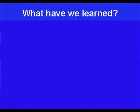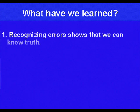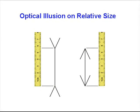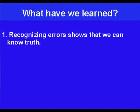What have we learned? First, we learned that we can only recognize errors by knowing the truth. We were able to tell that the lines were the same length, because we could measure them accurately. Once we knew the truth of them being the same length, we could tell that we were in error previously when we thought that they were different lengths. Thus, recognizing errors proves that we can know the truth.